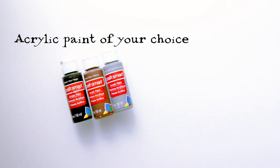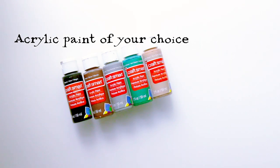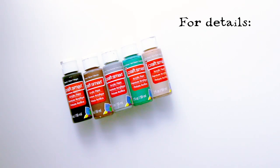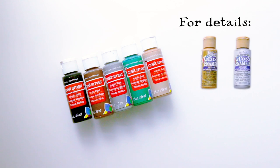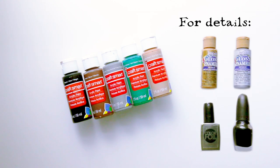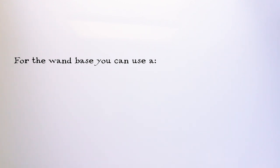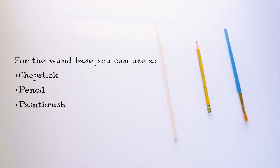A few suggestions are black, brown, gray, green, and light brown. For the details, a few suggestions are metallic gold or silver. And if you don't have any paint, nail polish would be great to use. Lastly, for the wand base you can use a single chopstick, pencil, or a small tapered paint brush you don't use anymore.